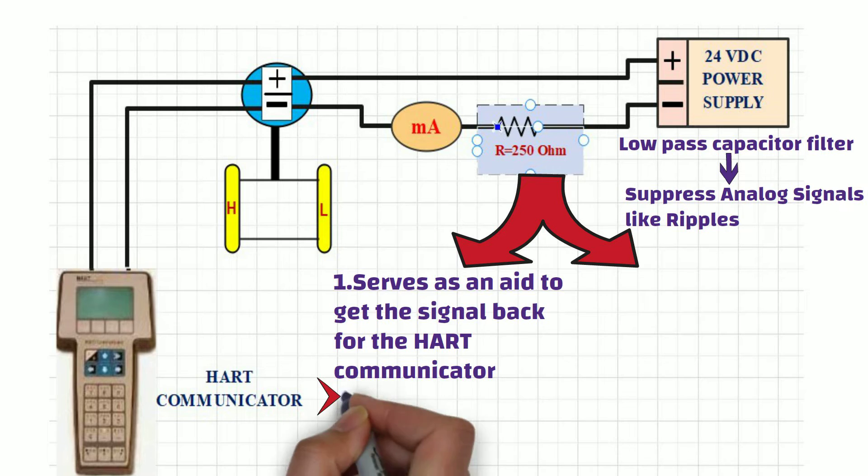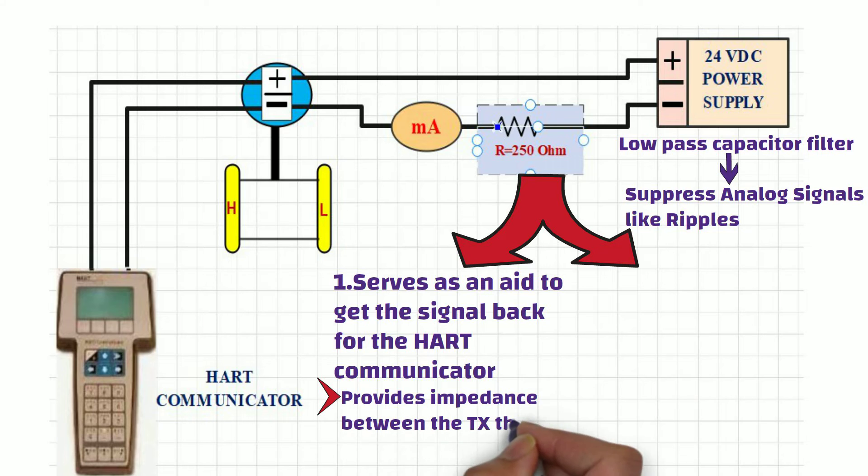So, adding a resistor just provides impedance between the transmitter and the filter circuit, which help HART communicator to communicate with transmitter.